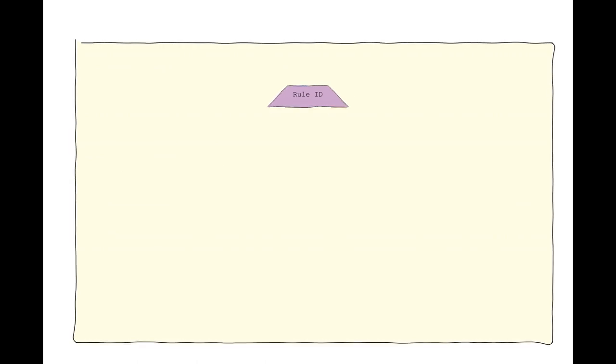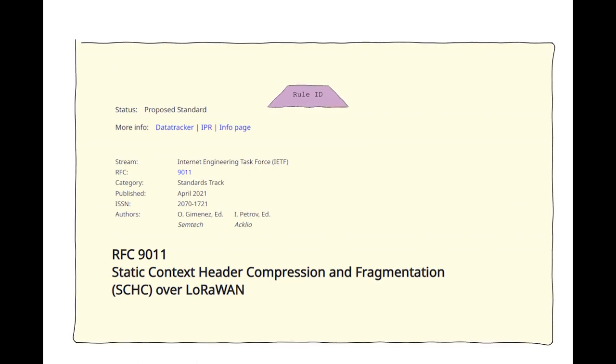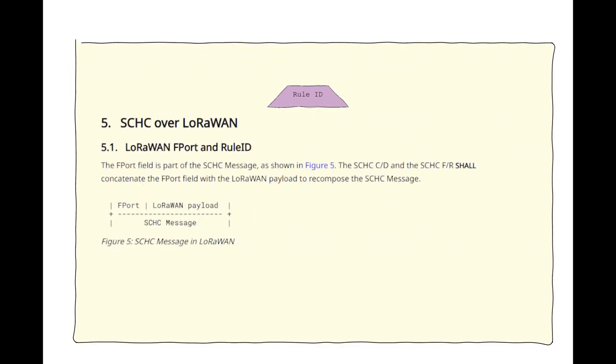Certain technologies propose a fixed length for rule IDs. One such example is the LoRaWAN technology specified in RFC 9011, where the rule ID is stored in the 8-bit F port field.